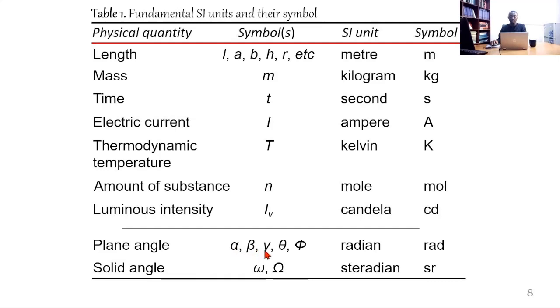Plane angle, alpha, beta, gamma, theta, and phi. This is radian, the SI unit, symbol rad. The solid angle, small letter omega as well as capital letter omega, SI unit steradian, symbol sr. You will notice that all symbols for physical quantities are written in italic, while symbols for SI units are not italicized. This is standard scientific notation.